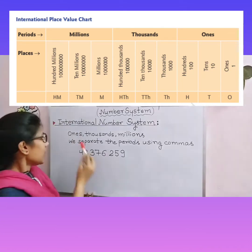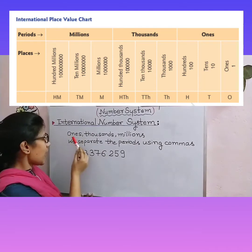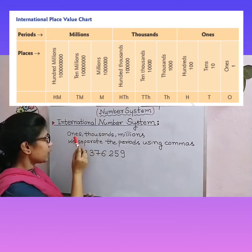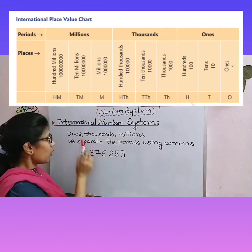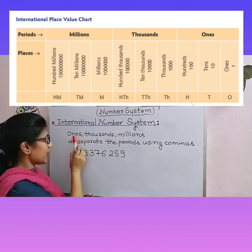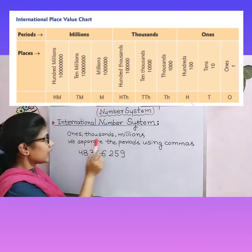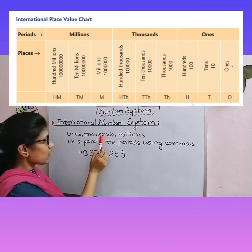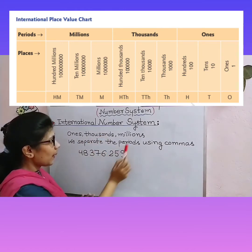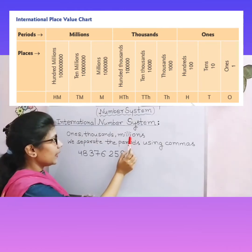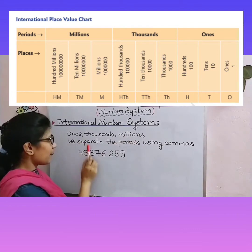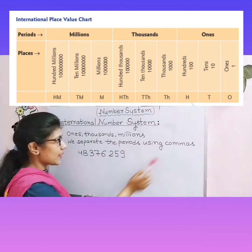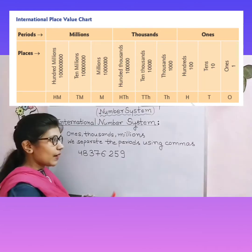Our chart's main points: International Number System has three main columns — Ones, Thousands, and Millions. Ones has three columns: ones, tens, hundreds. Thousands has: thousand, ten thousand, hundred thousand. Millions has: million, ten million, hundred million. We separate the periods using commas.